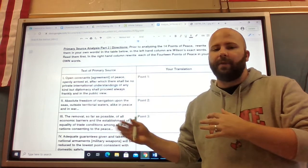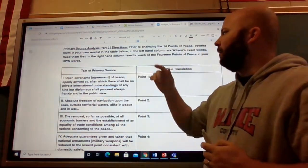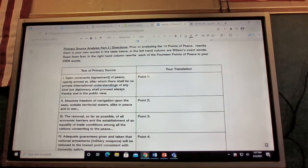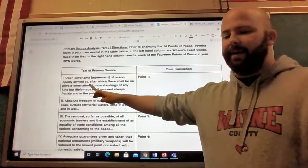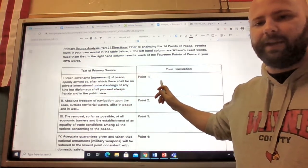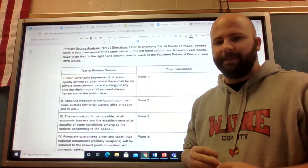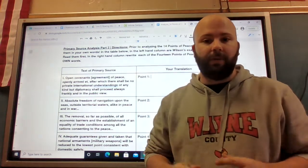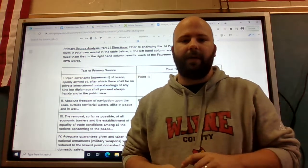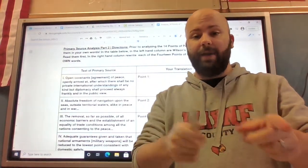Now we're moving on to the next part of our assignment, where we're going to actually take the 14 points and analyze them. The directions are: prior to analyzing the 14 points of peace, rewrite them in your own words. In the table below in the left-hand column are Wilson's exact words. Read them first. In the right-hand column, rewrite each of the 14 points in your own words. I'm going to give you a few minutes to work on that. Go ahead and pause me again.